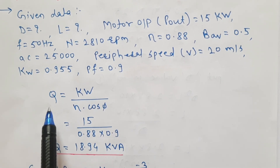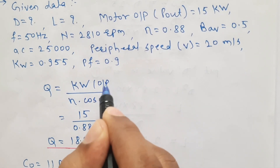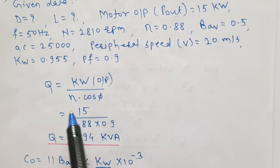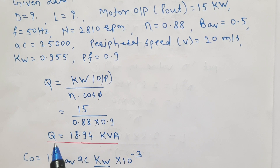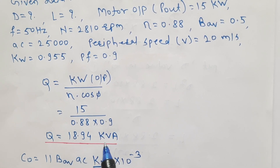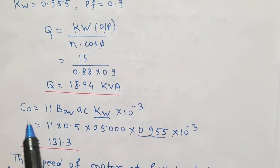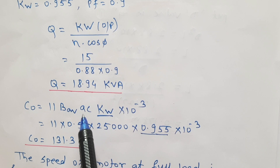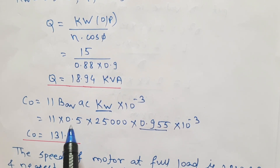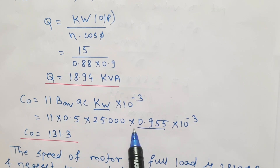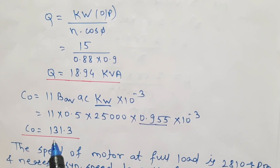Now solving: Q equals input rating in KVA equals KW divided by efficiency into cos phi. Motor output KW is 15 kilowatt, so Q equals 15 divided by 0.88 into 0.9, which gives Q equal to 18.94 KVA. Second step, the output coefficient C0 equals 11 times B_AV (0.5) times AC (25000) times Kw (0.955) into 10 to the power minus 3, which equals 131.3.